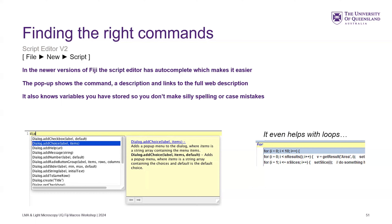As some people may have noticed, especially with the last exercise, for common things it will auto-populate. If you start typing 'for', it'll give you a little generic follow-up, or it'll do ones for like how many results, how many slices. So that's really helpful.